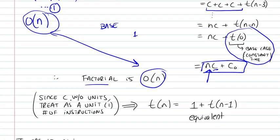And also, since c is without units, and it's just a constant step, we're not really sure how many instructions are involved. We're just going to treat it as a unit, a unit of the number of instructions. So it won't really matter, actually. In our final result, big O of n will always be the same.